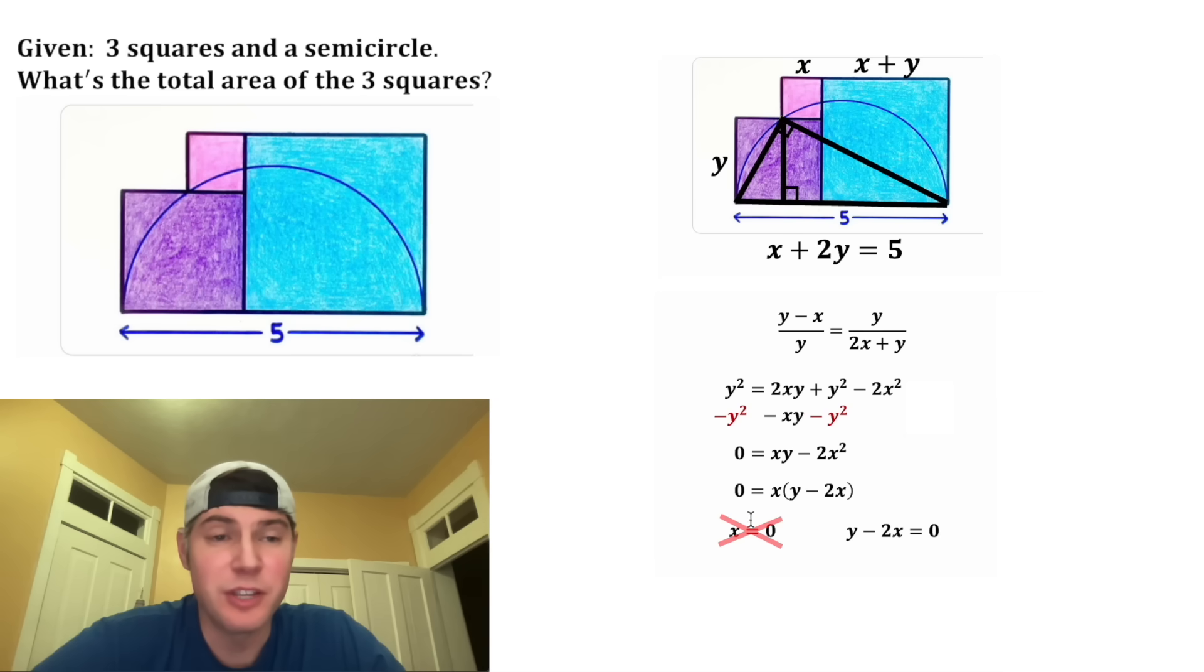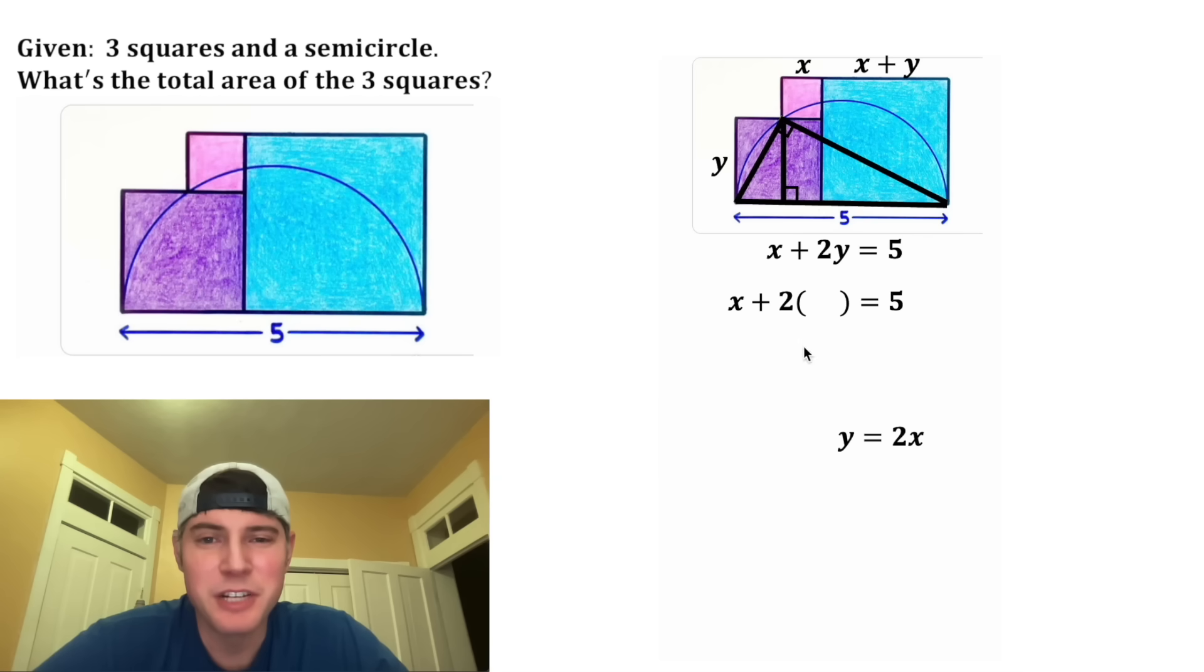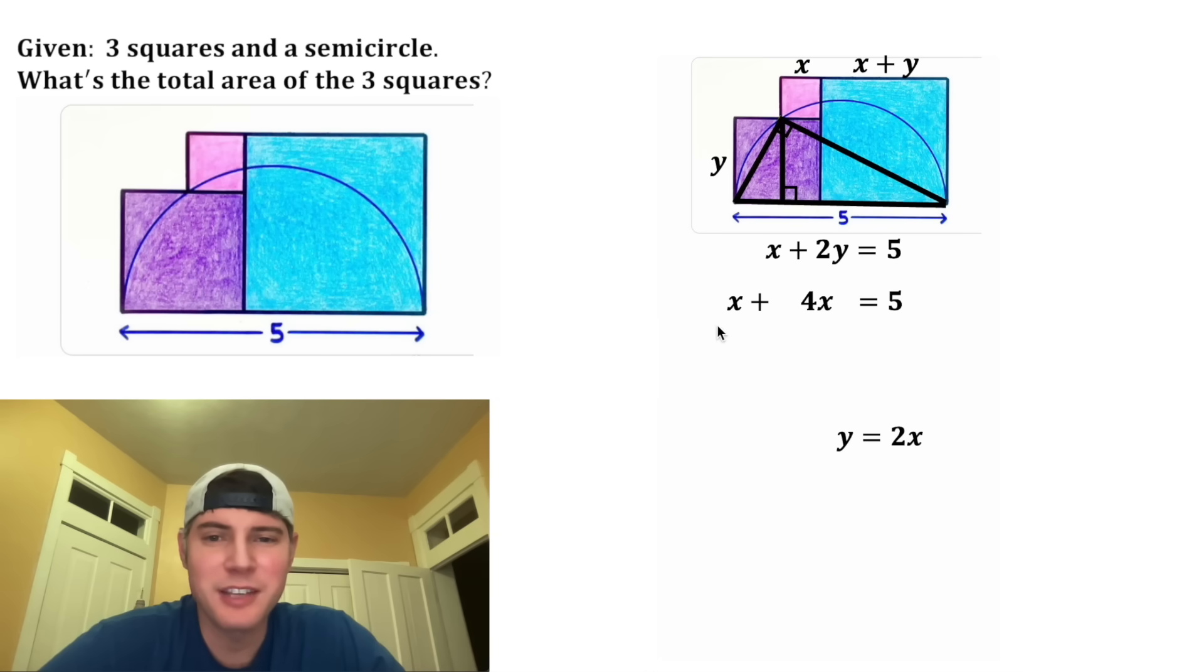We know X can't equal zero, so this one's gone. And then for this one, if we add 2X to both sides, we get Y is equal to 2X. And so we just did all of this work to find out that Y is equal to 2X. So now we have our two equations. Let's copy this one down, and then in place of Y let's plug in 2X. 2 times 2X is equal to 4X, and X plus 4X is equal to 5X. After we divide both sides by 5, we get X is equal to 1. And let's put a box around that. And now for Y equals 2X, let's plug in 1 for X, and 2 times 1 is just 2, so we know that Y is equal to 2.